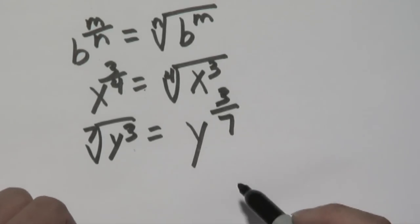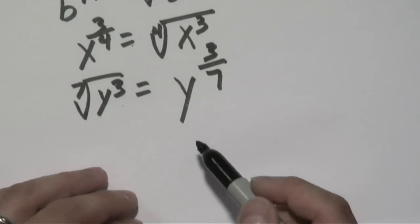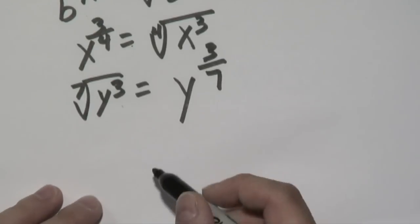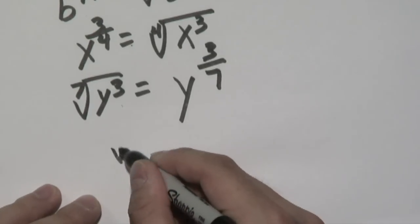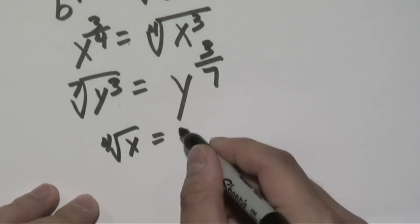Now that proves really useful when it comes to solving equations with radicals involved, because you can actually rewrite them and cancel out the radicals in the long run. So for example, if you have, let's just say, the fourth root of x is equal to 2.